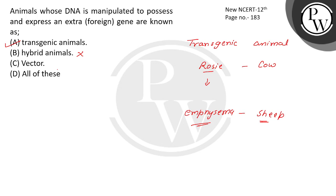So here it is incorrect — it is a hybrid animal, it is not transgenic, it is not being manipulated. Simply you cross it and you get hybrid animals. Then there is vector — if it is incorrect, all of these are incorrect. The correct option here is Option A: Transgenic animals. Thank you.